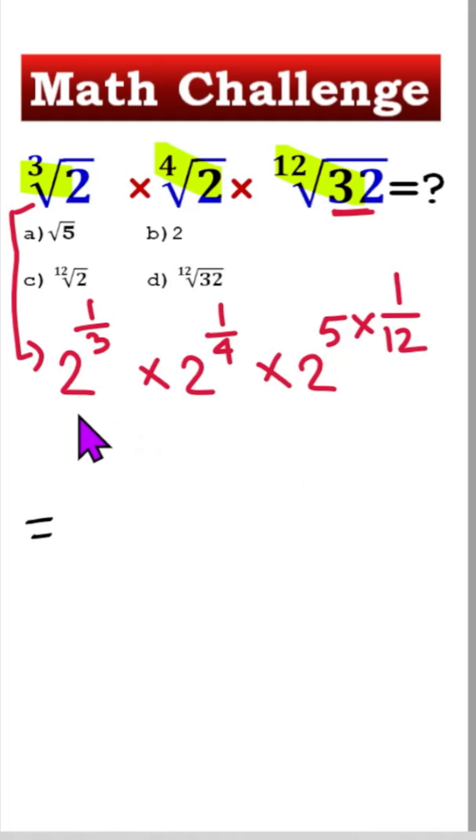Next, here all bases are the same: 2, 2, 2. So we can write 2 and here is 1 divided by 3 plus 1 divided by 4 plus 5 divided by 12.